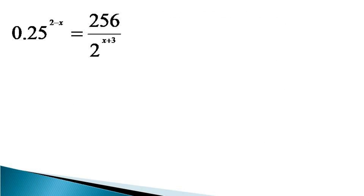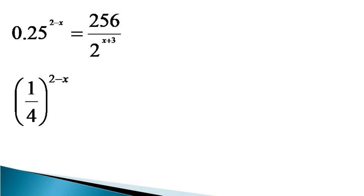To solve this exponential equation, first we represent the left hand side in fractional form and 0.25 becomes 1 by 4, so the left hand side becomes 1/4 raised to the power (2 minus x). On the right hand side, the numerator is expressed in the form of its prime factors and becomes equal to 2 raised to the power 8 divided by 2 raised to the power (x plus 3).